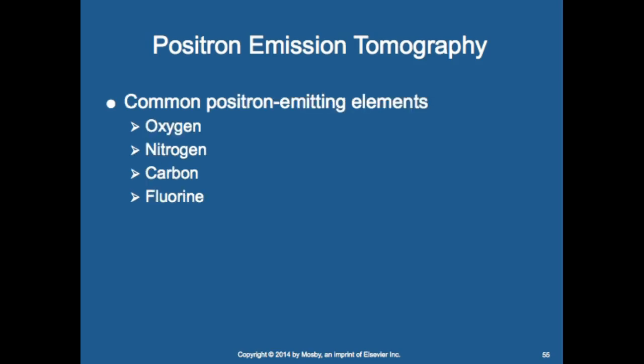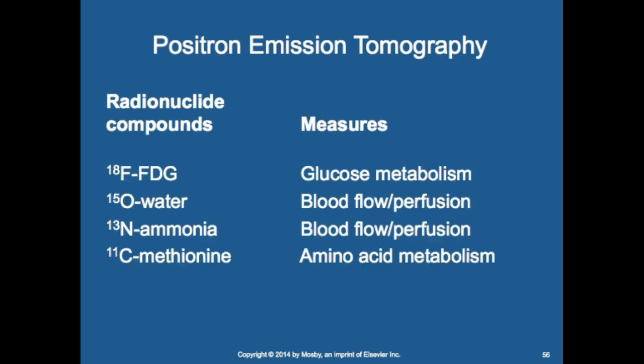Common positron-emitting elements include oxygen, nitrogen, carbon, and fluorine. FDG (fluorodeoxyglucose) looks at glucose metabolism and is used for oncology — we can manufacture this, inject it into patients, and detect any increased metabolic rate. O-water is used for blood flow and perfusion, ammonia also for blood flow and perfusion, and methionine for amino acid metabolism.